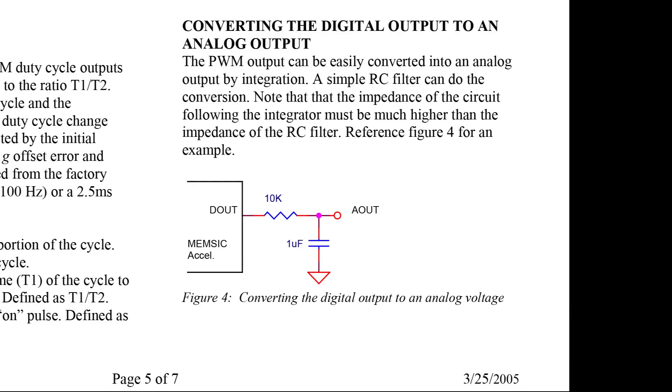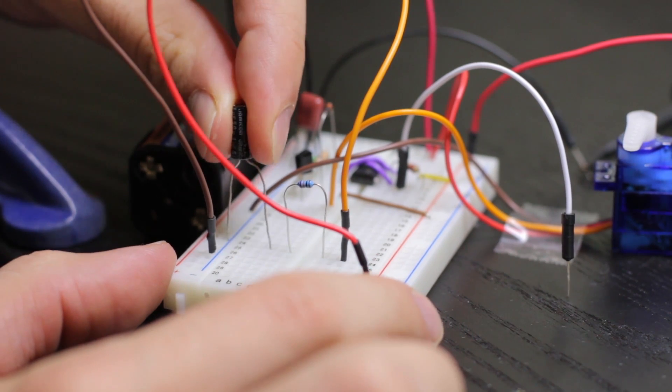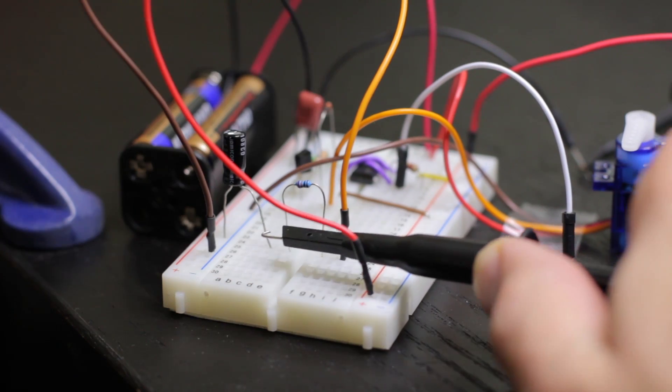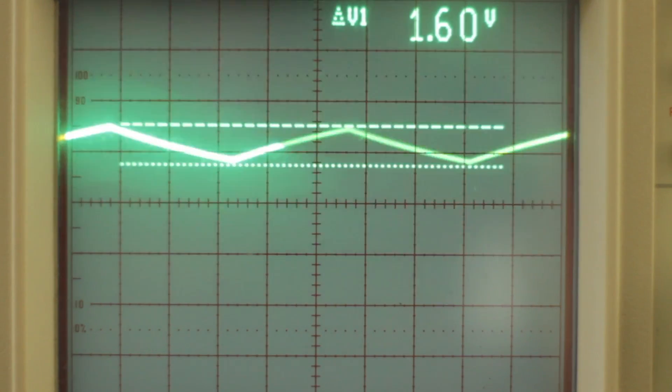Now the datasheet also explains you can create a DC voltage from this output voltage by creating an RC low pass filter. So we'll build that up on the prototyping board and check that out as well.